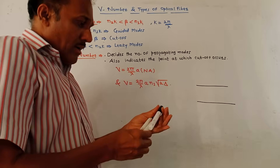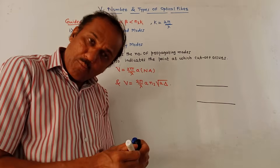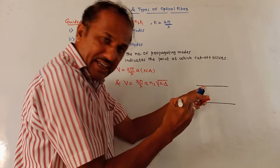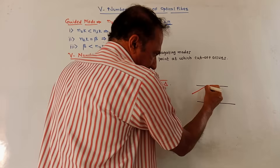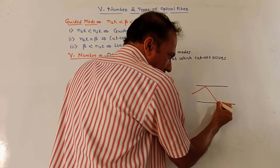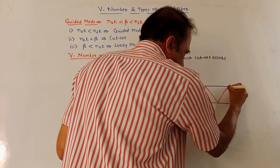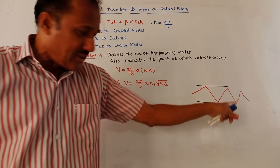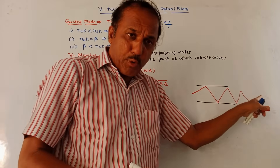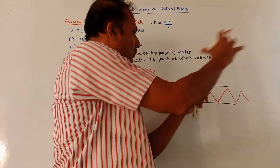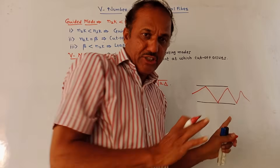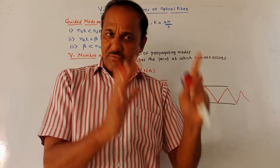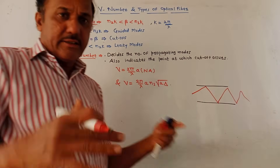The light is emitted from the light source. It enters into the core layer, strikes one of the boundaries, gets reflected, strikes the lower boundary, and again gets reflected. Likewise, in a zig-zag fashion, the light rays propagate and move forward from source to the destination end. This concept is called total internal reflection, which we studied in the earlier video.